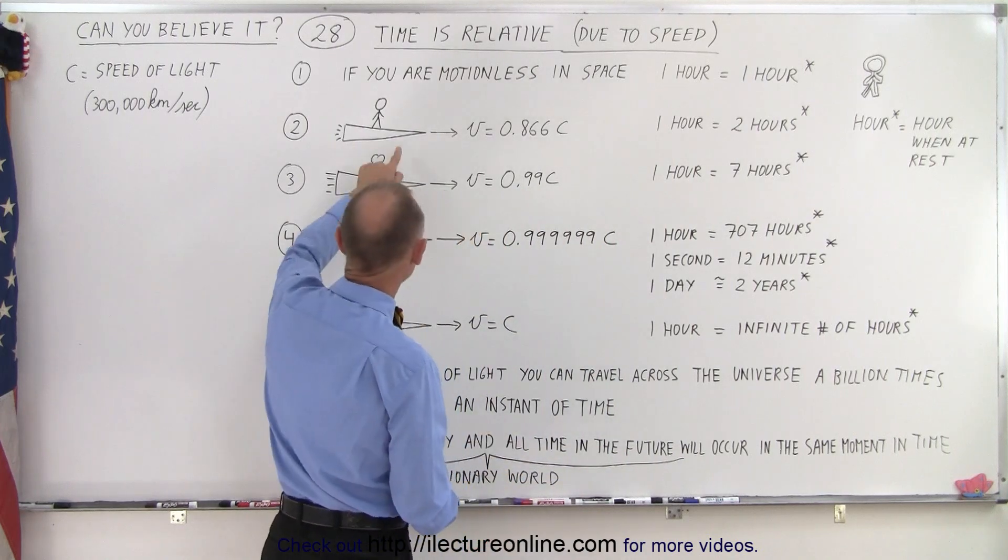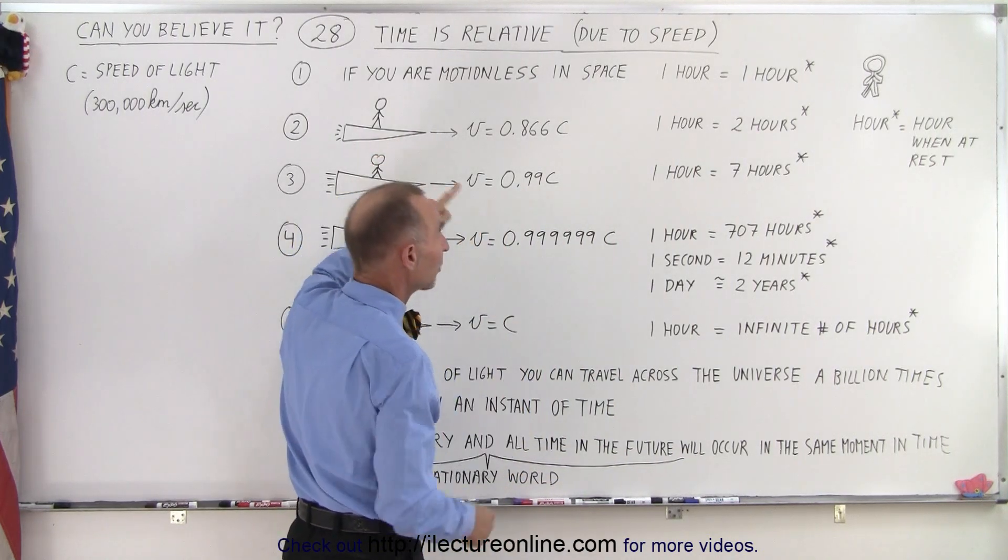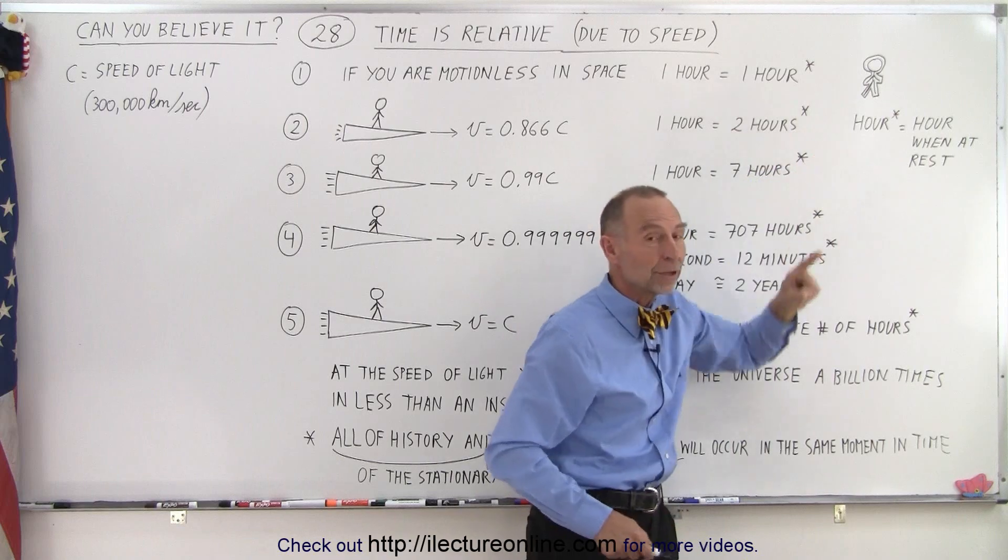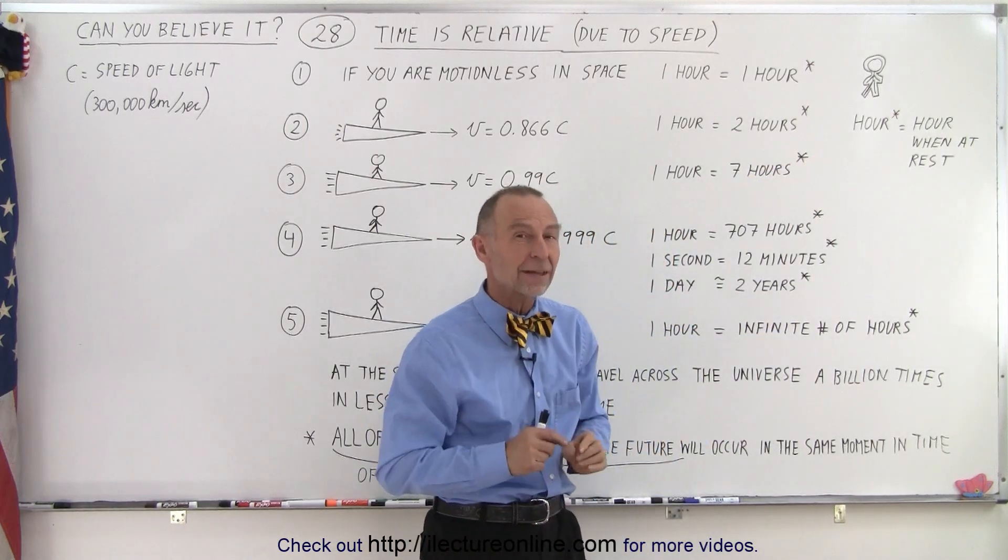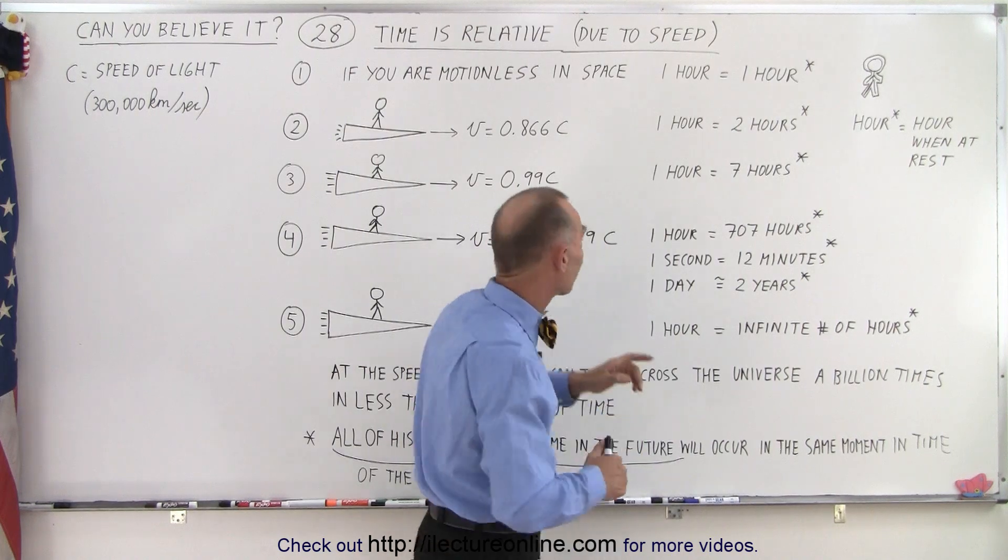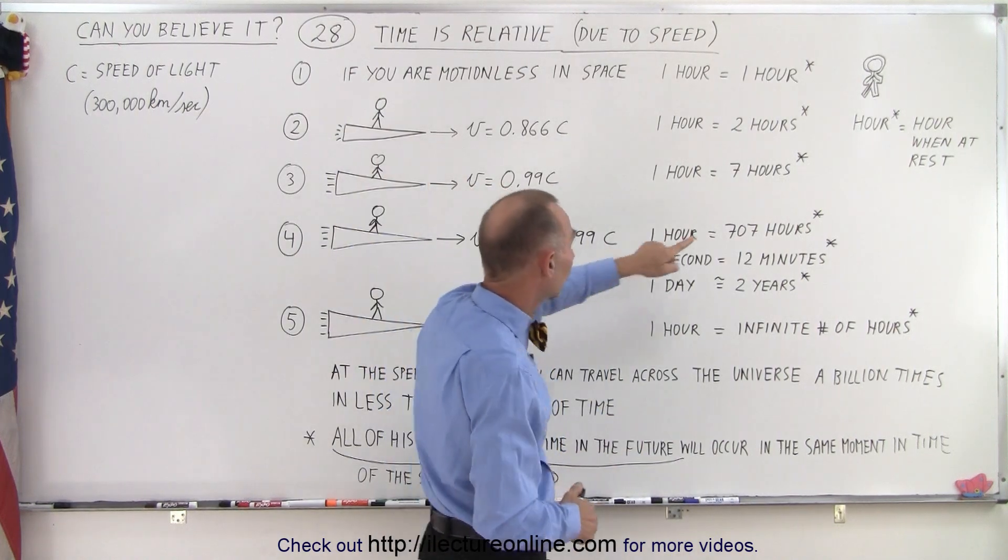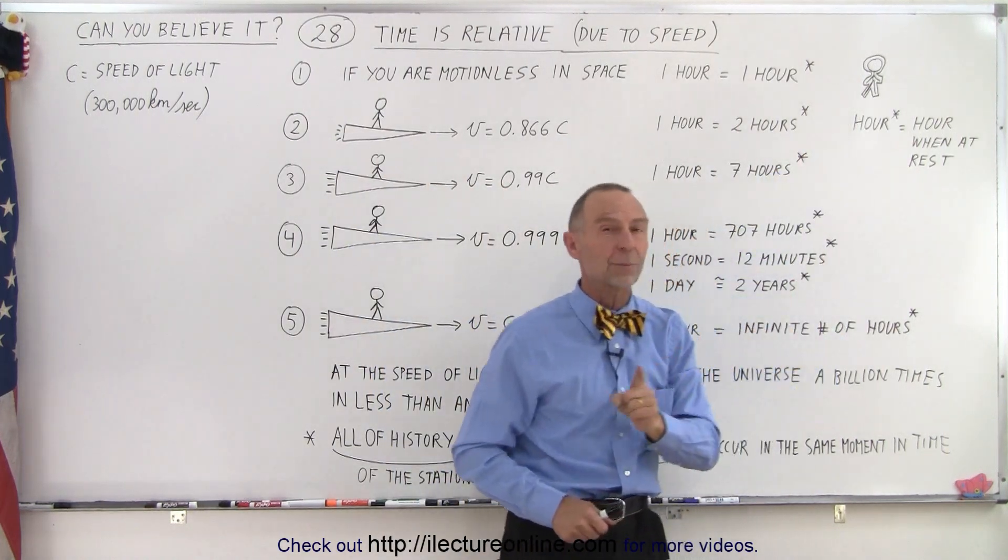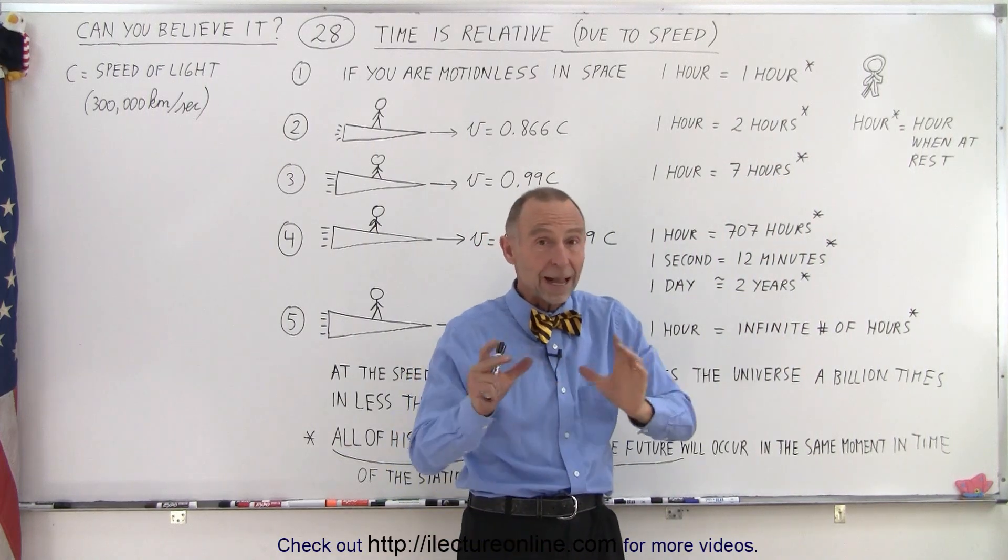In other words, the time that your watch will go through one hour of time, the watch of the person floating in space during that same amount of time, that watch will show that two hours have passed. This person will have aged one hour, this person during the same period of time will have aged two hours, because time is not the same.